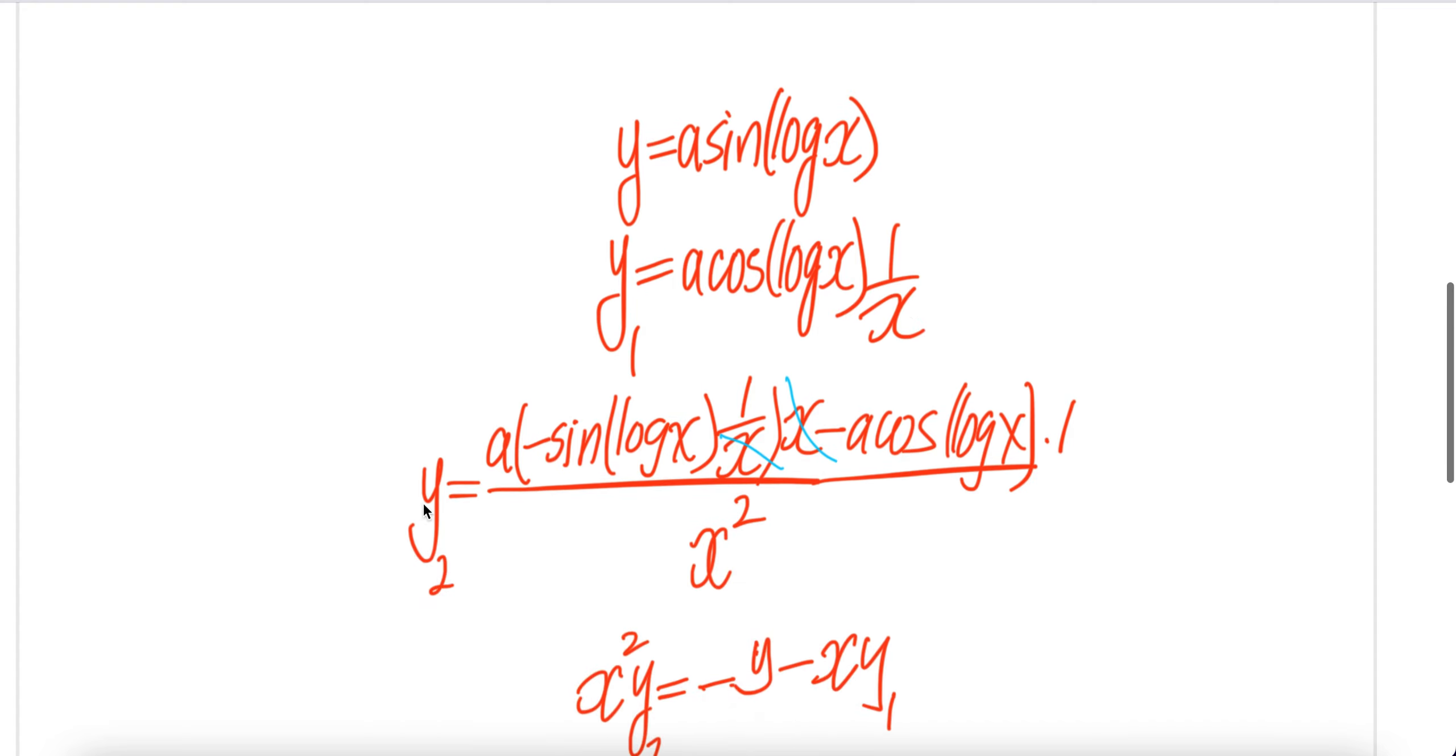Now take the second derivative with respect to x on this line. You get y₂ equals—this is a quotient of two functions: a cos(log x) divided by x.